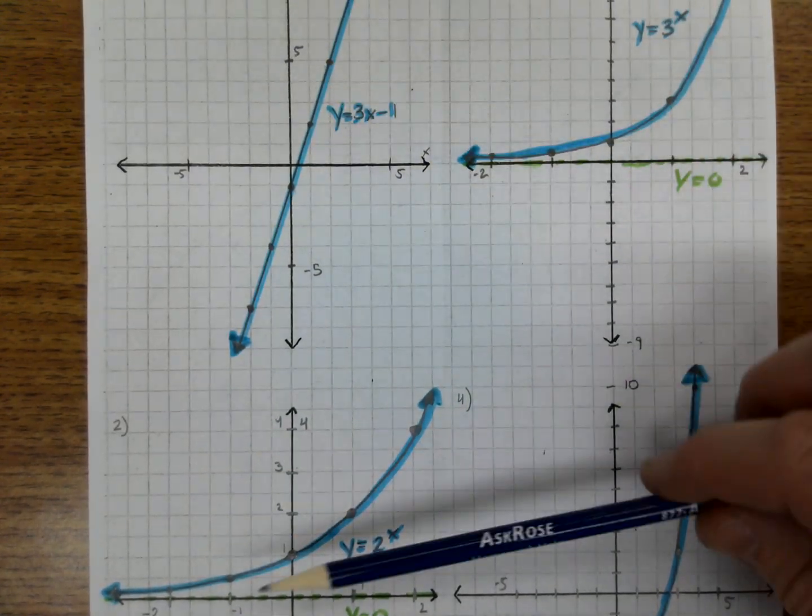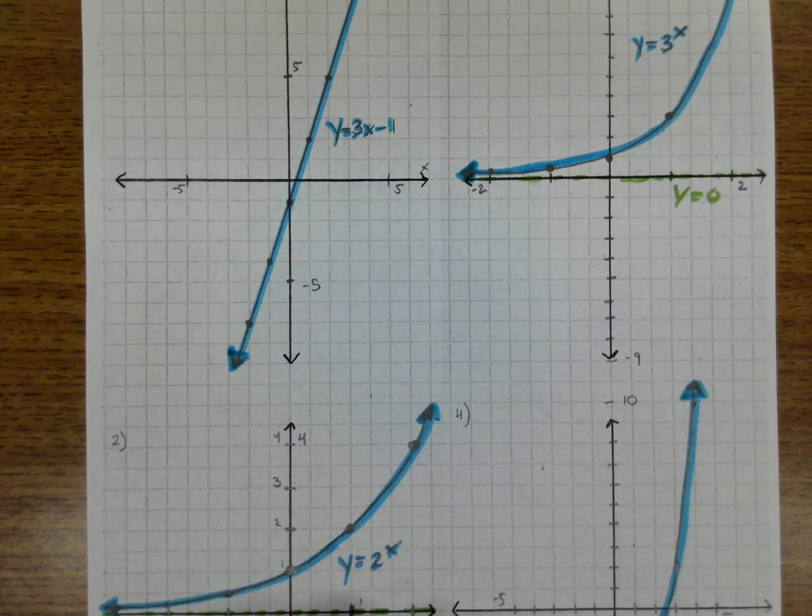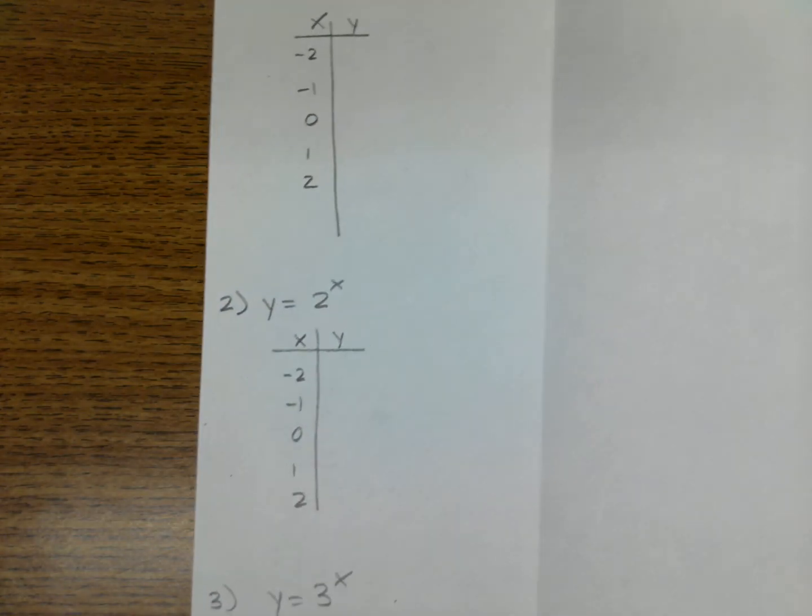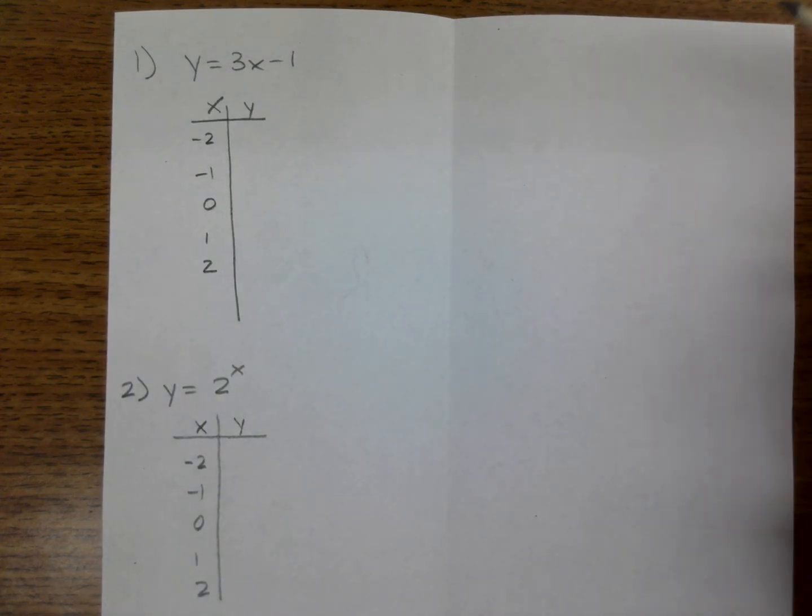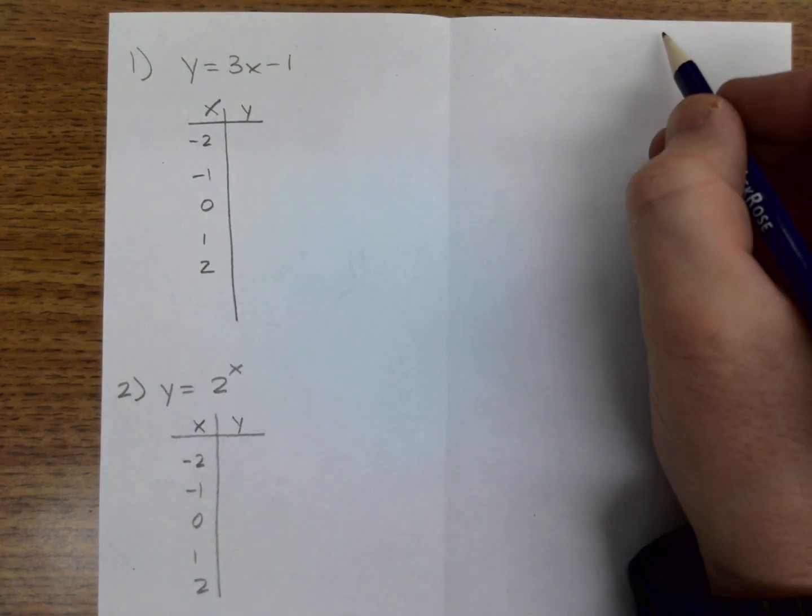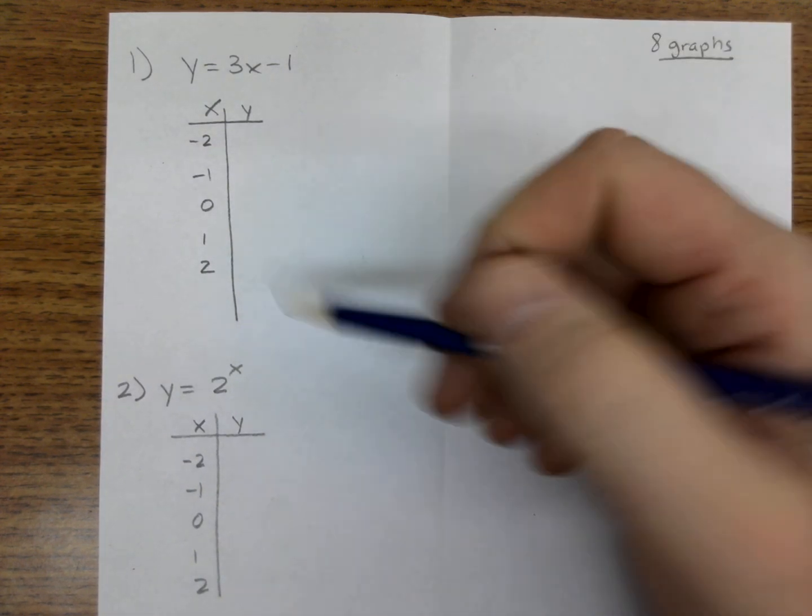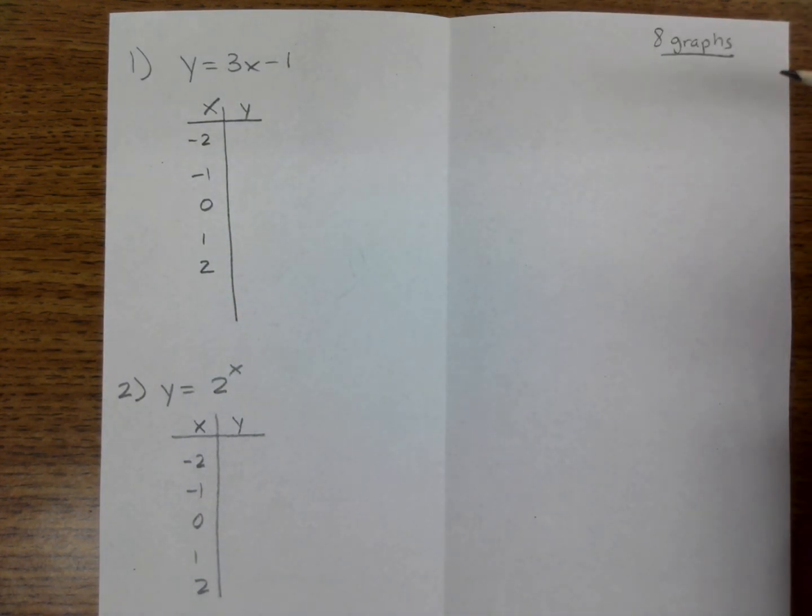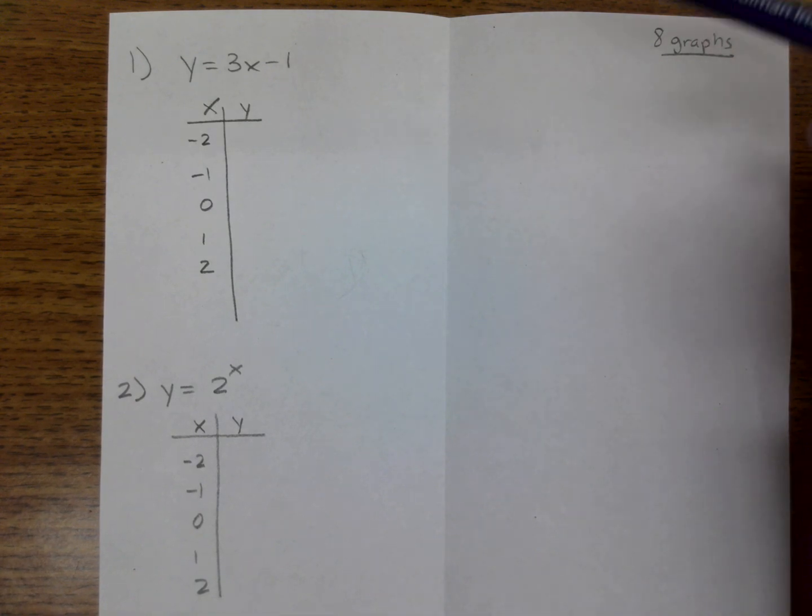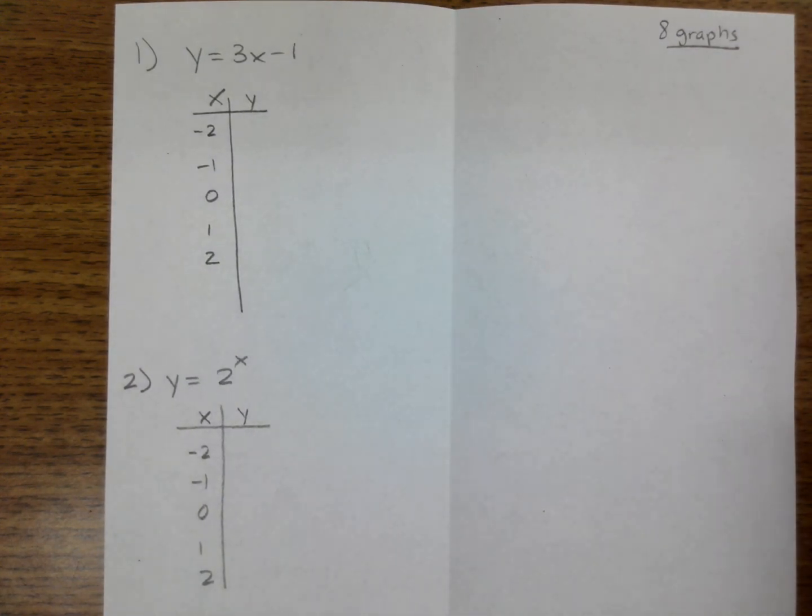So this is our goal today. Our goal is to make these graphs, and we're going to do that by starting them on a sheet of paper with a table. So you want to get a blank sheet of paper, fold it, call the assignment 8 graphs, and we're going to make our tables here and then turn around and graph them. Today in class we got the first three done, so I'll try to do that here with you now.